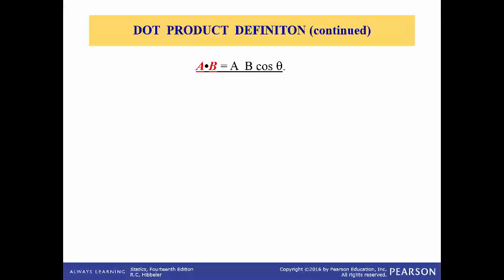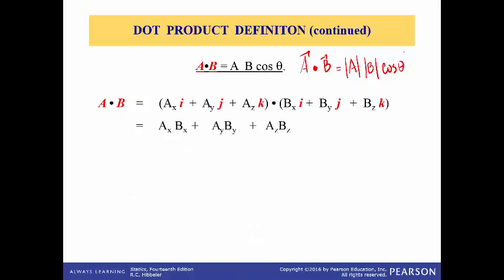This short video will review the dot product. This reads as A dot B. A and B are vectors, so A dot B is the magnitude of A times the magnitude of B times the cosine of theta, which is the angle between the two. That is also equal to the component form: Ax, Ay, Az. So we have those two equalities.